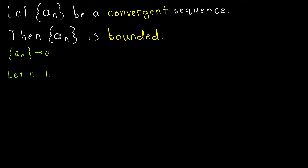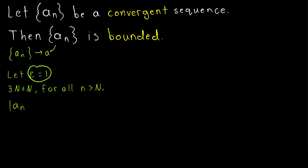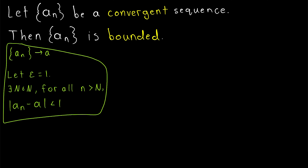Then by definition of a convergent sequence, we could pick any positive number epsilon that we want. Let's say epsilon equals one, and it would follow by definition there exists some natural number big N so that for all terms of the sequence after the big Nth term, we have that those terms are within one of that limit a. So the absolute value of a_n minus the limit a is less than one. This is just by definition of the sequence a_n converging to a.